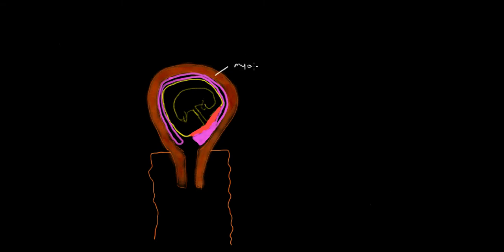If this is the uterus, drawn in brown, this is the myometrium or the uterine muscle. The purple is the decidua, which is really the endometrium or the lining of the uterus. The fetus has implanted into the endometrium and then expanded, so that it takes with it a layer of the decidua, and that's why the decidua then reflects back onto the uterine wall.